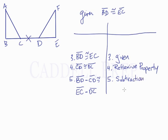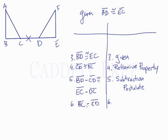Now lastly we use substitution. BD minus CD is the same as BC, and EC minus DC, getting rid of that part, leaves us with ED. So we write that BC is congruent to ED, and the reason is the substitution postulate.